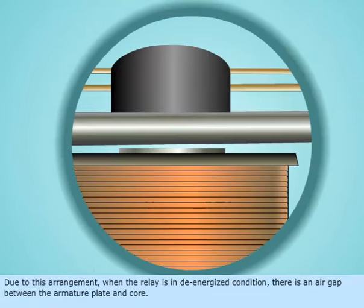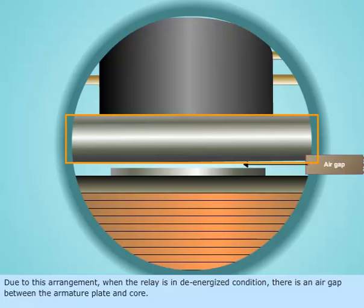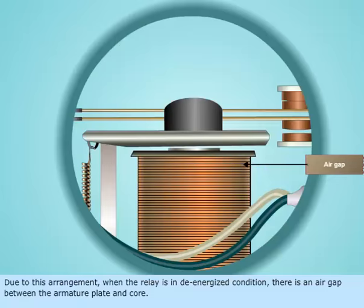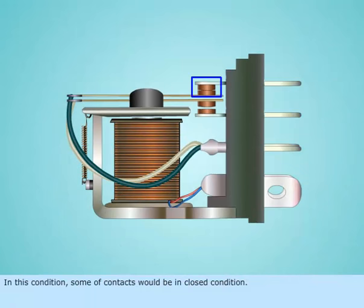Due to this arrangement, when the relay is in de-energized condition, there is an air gap between the armature plate and core. In this condition, some of contacts would be in closed condition.